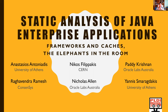Welcome to the presentation of Static Analysis of Java Enterprise Applications. We are going to discuss a couple of things that make Java Enterprise Applications interesting and can be improved in terms of static analysis. The first is the use of enterprise application frameworks, which affects the completeness of the analysis. The second is the use of CASI's central data structures, which we can optimize to improve analysis scalability. We call these two things the elephants in the room.